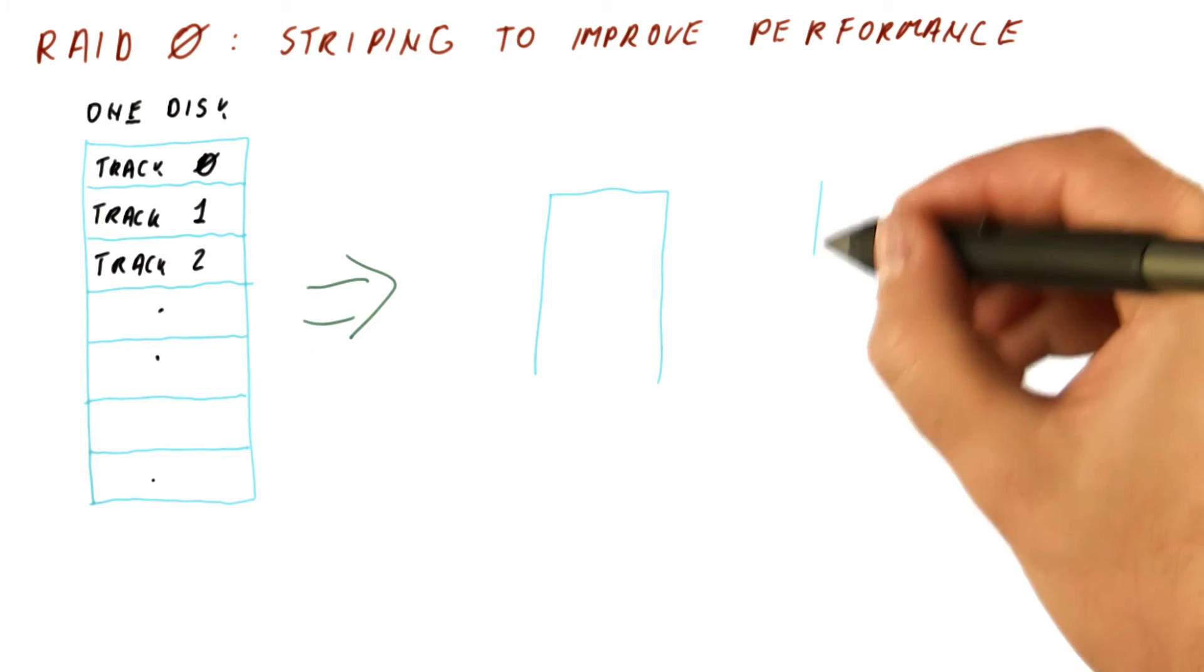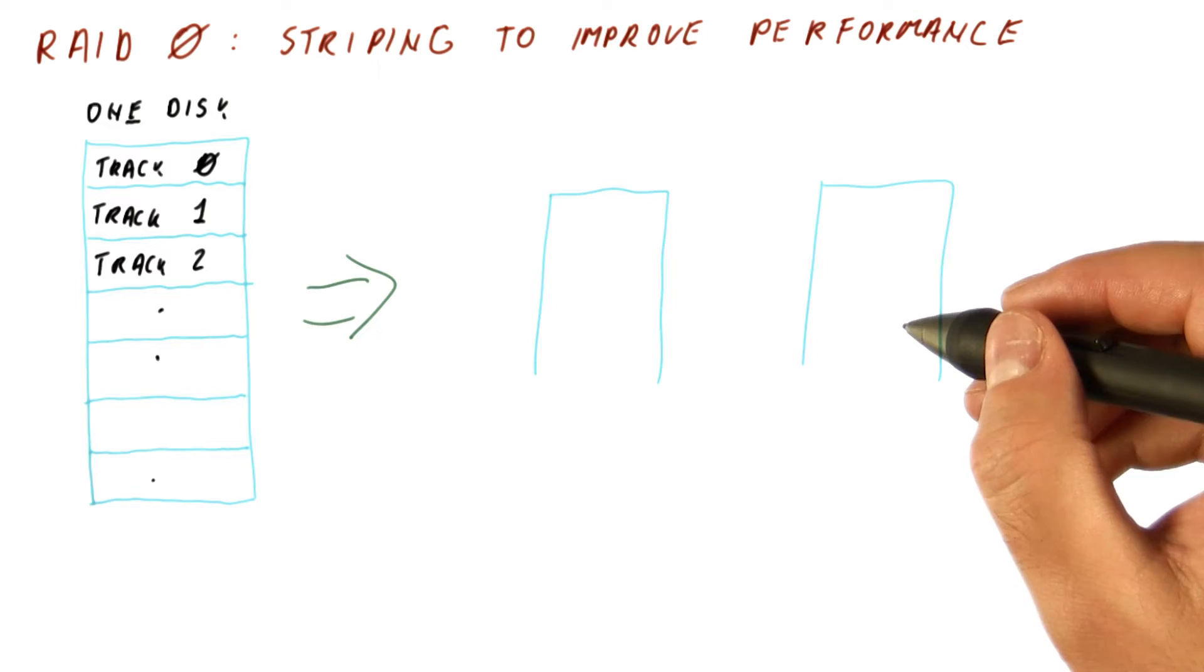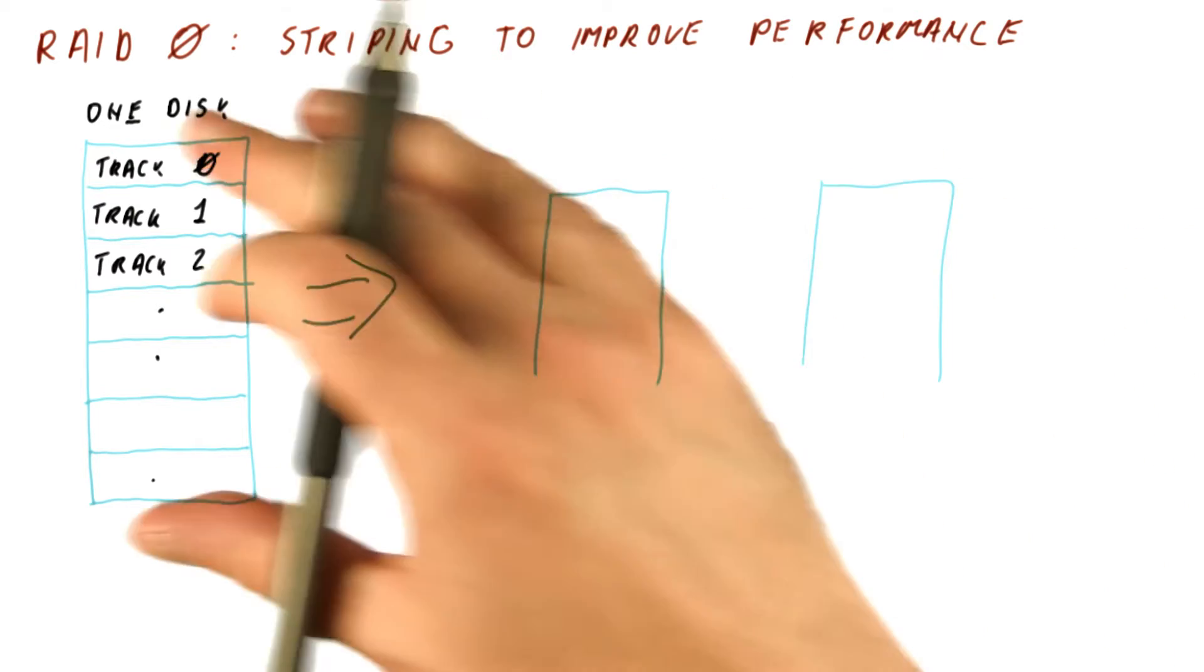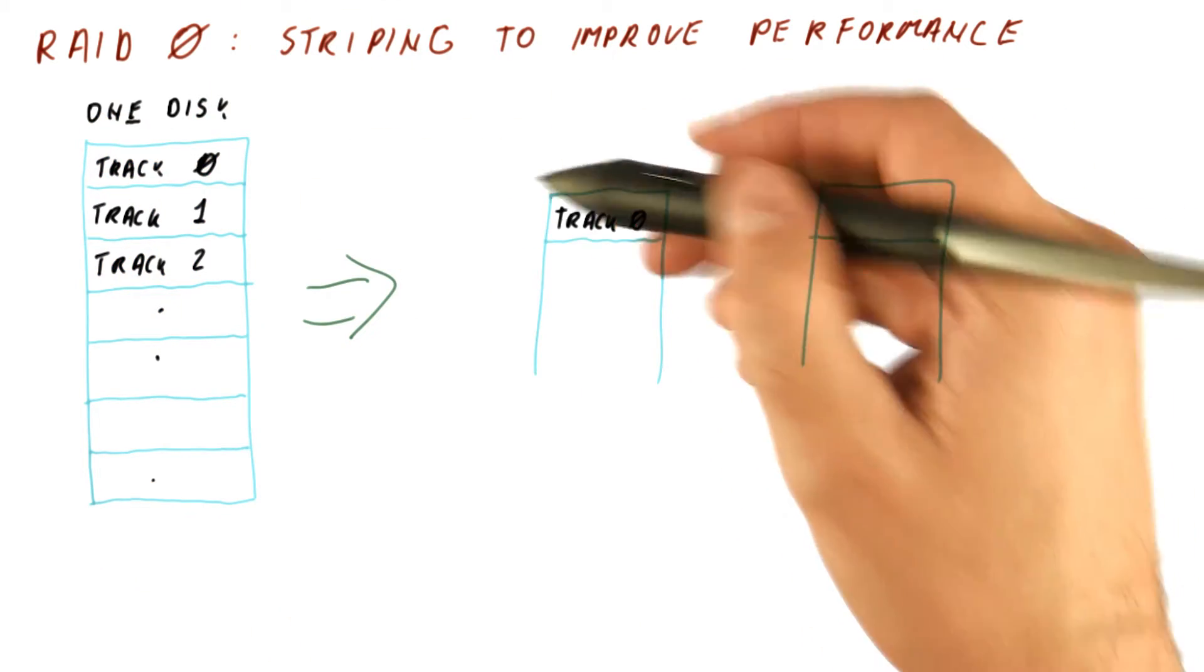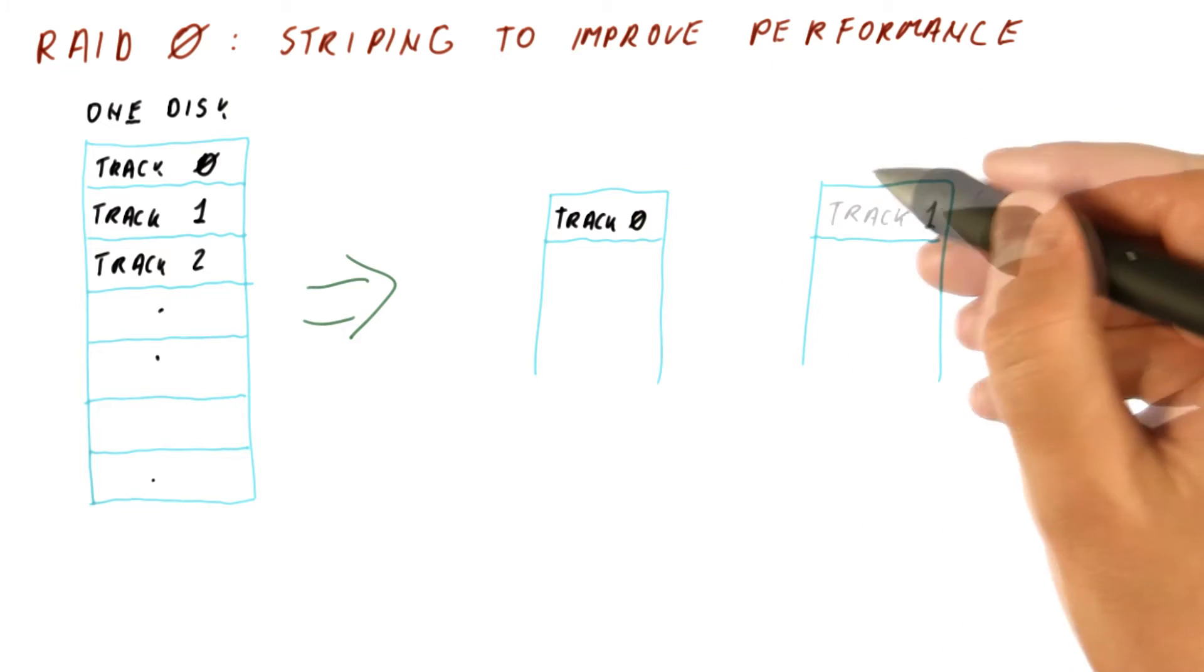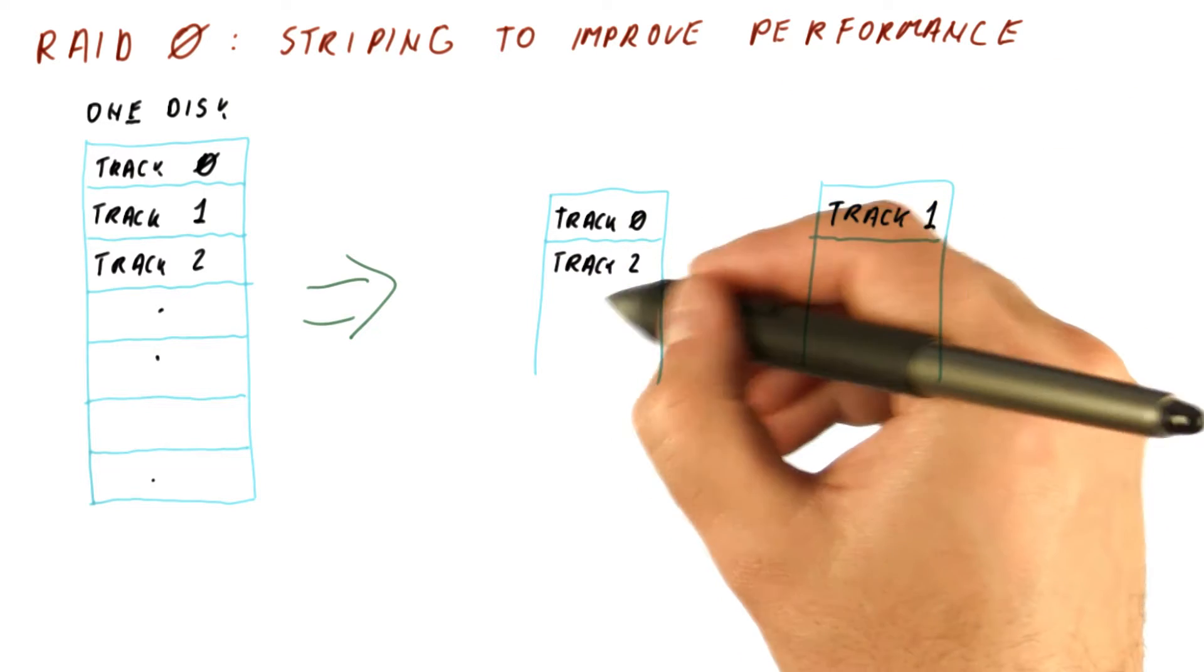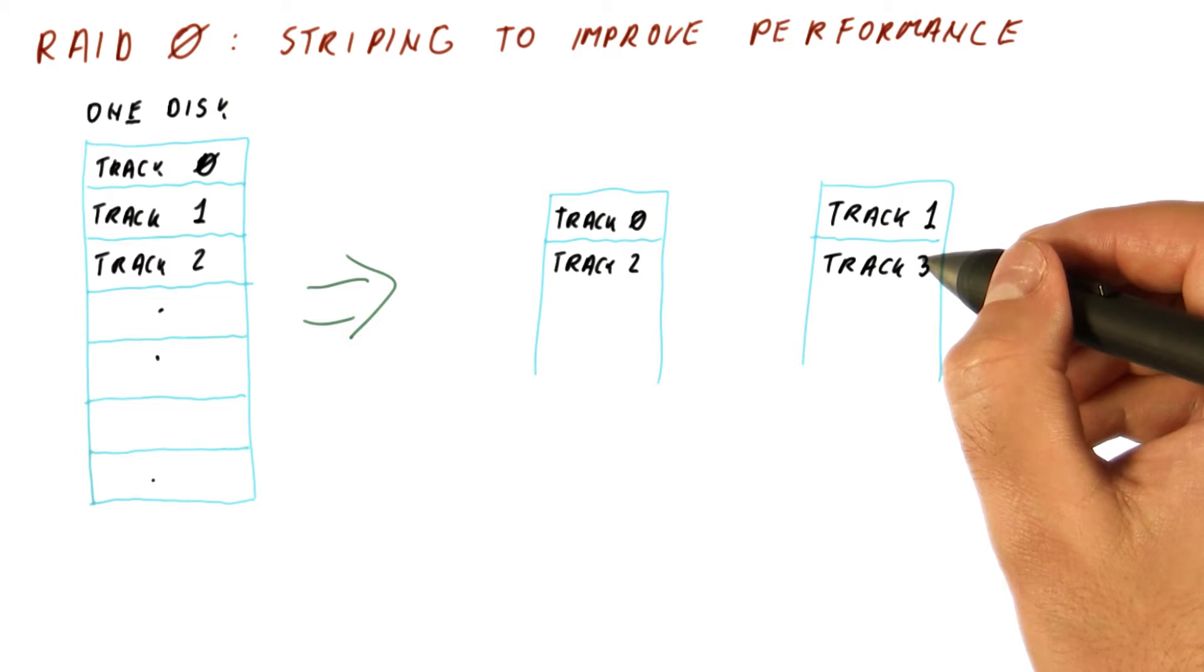What RAID 0 does is it takes two disks and makes them look like this one disk by putting the original track 0 here, track 1 here, track 2 here, track 3 here, and so on.